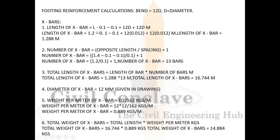X bar: Length of bar = L − 0.1 (cover) − 0.1 (cover) + 12d (bend) + 12d (bend). Length of X bar = 1.2 − 0.1 − 0.1 + 12 × 0.012 + 12 × 0.012 = 1.288 meters. Number of X bars = opposite length / spacing + 1.